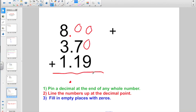0 plus 0 plus 9. Hey, that's 9. 0 plus 7 plus 1. Hey, that's going to give us 8. And lastly, over here in the 1's column, 8 plus 3 plus 1, that's going to give us 12 for a grand total of 12 and 89 hundredths.